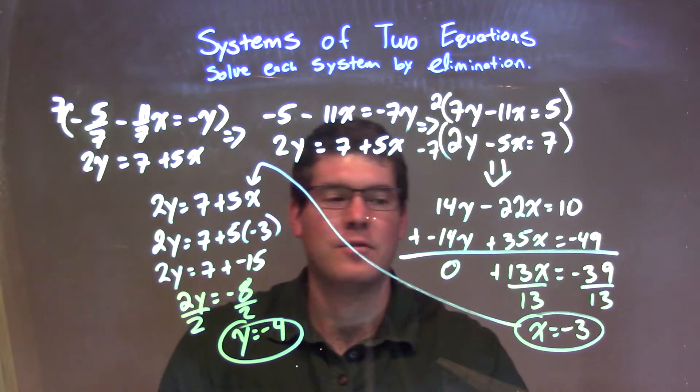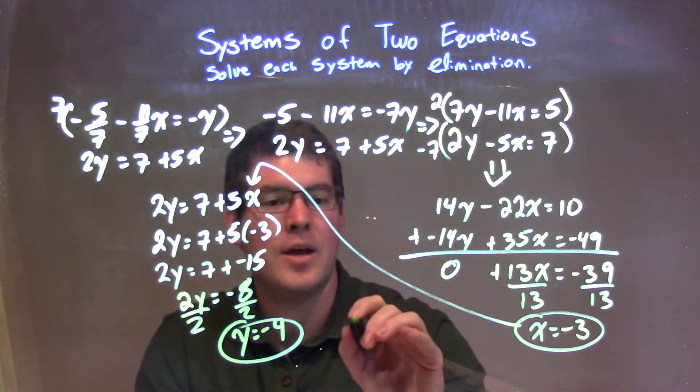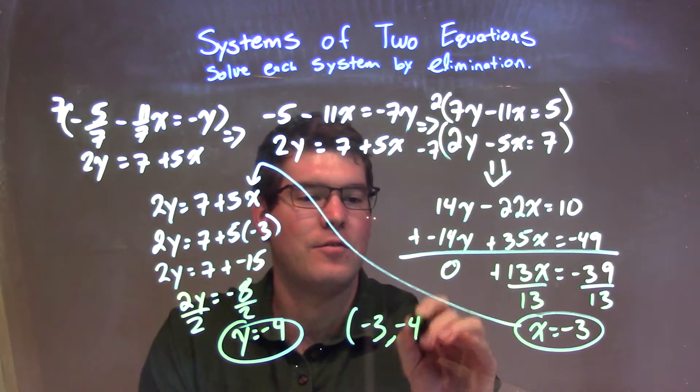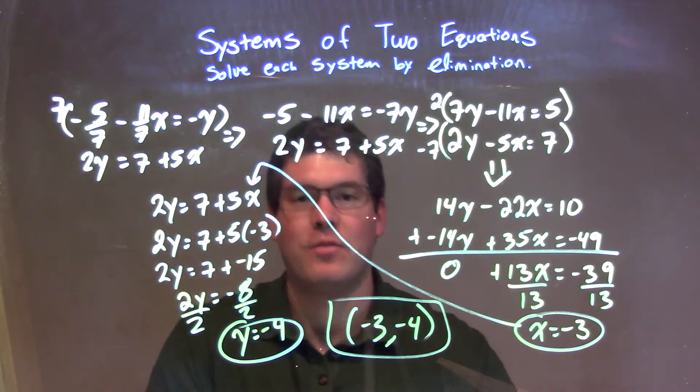We have y to be negative 4, x to be negative 3. We can combine that together to have a coordinate point of negative 3 comma negative 4. And there we have the final answer.